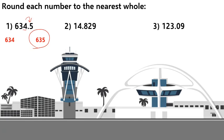Let's look at number 2, 14 and 829 thousandths. It's between 14 and 15. If we look at the tenths place, we see an 8, which means it's more than halfway to the next number. So, we would round up to 15.